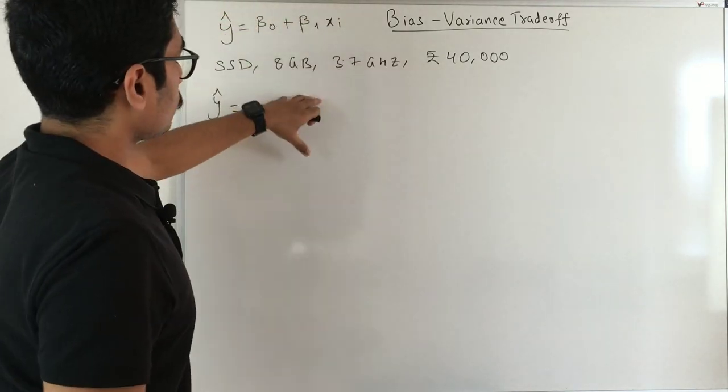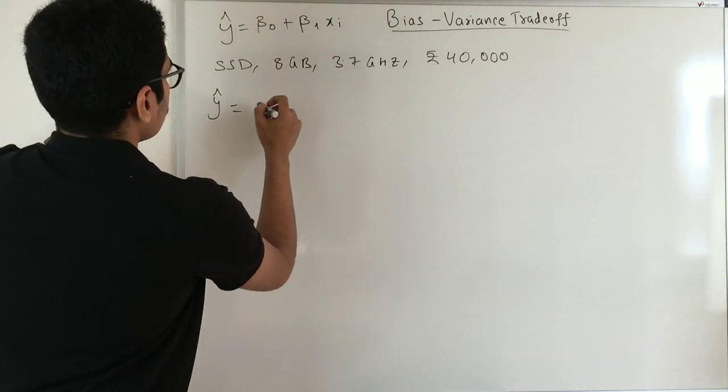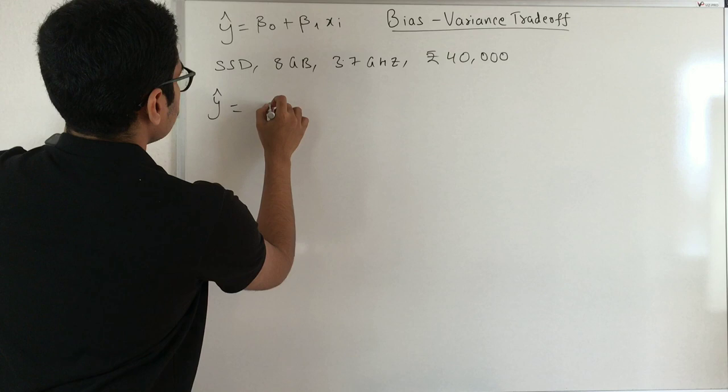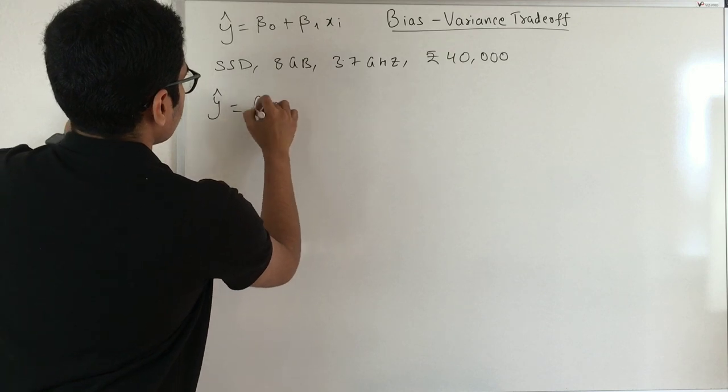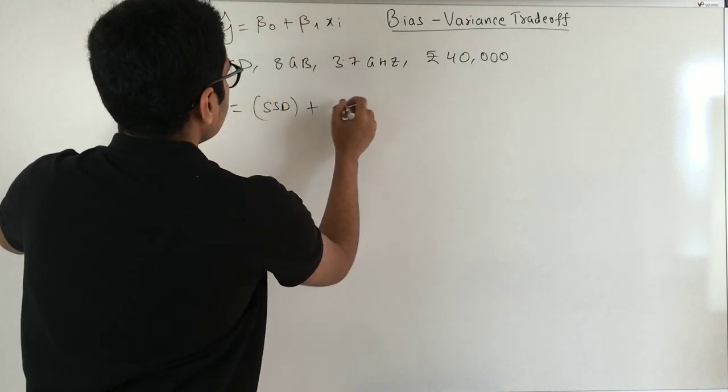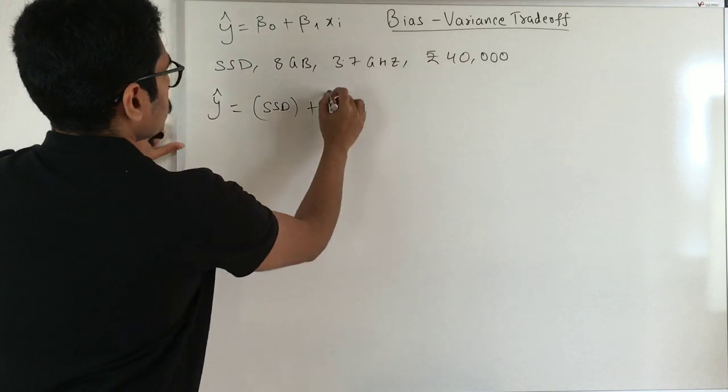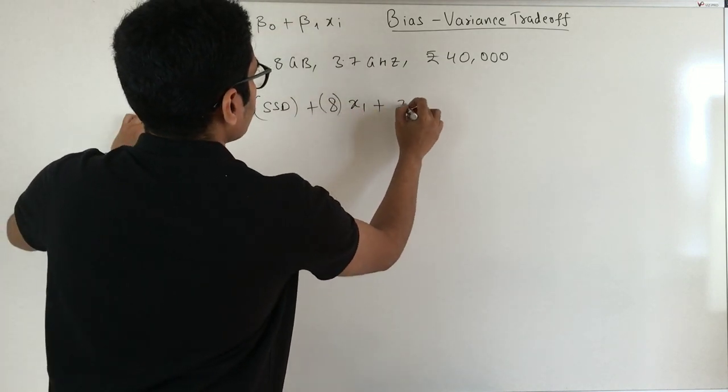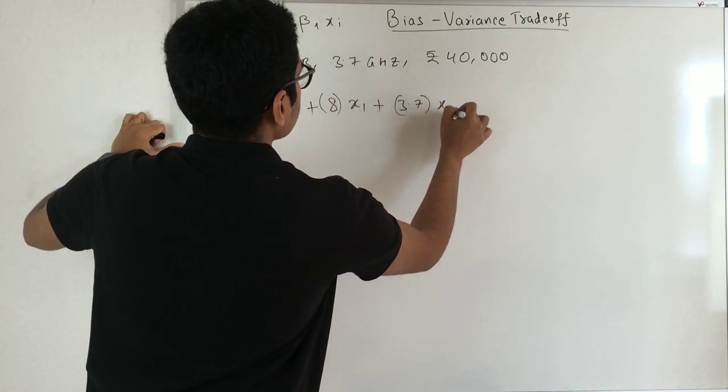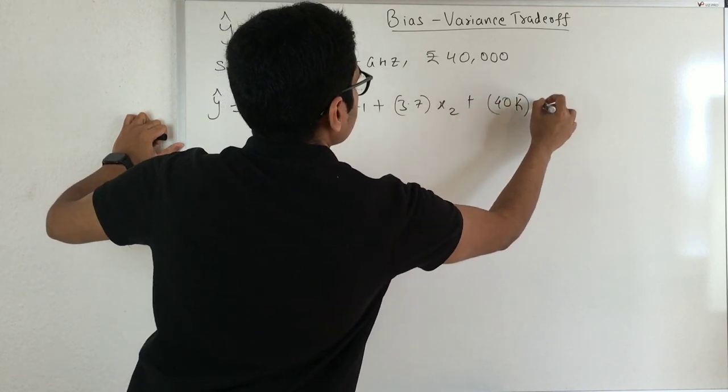If I want to plug in these values into this equation for prediction, say I have SSD, that is beta naught, and then 8 GB, which is x1, and 3.7, that is x2, and 40,000, which is x3.